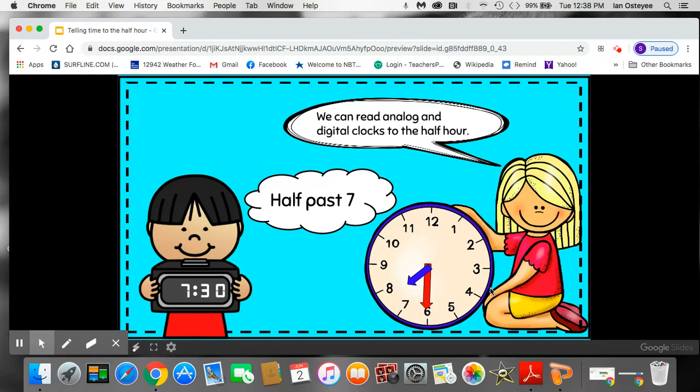5, 10, 15, 20, 25, 30. This analog clock says 7:30. And I'm going to check it over here on my digital clock. Yep. 7:30 or half past 7.